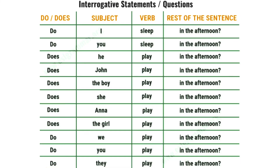In questions: 'Do I sleep in the afternoon?' Here, 'I' is the subject, 'sleep' is the verb, and 'in the afternoon' is the rest of the sentence. 'Do you sleep in the afternoon?' Here, 'you' is the subject, 'sleep' is the verb, and 'in the afternoon' is the rest of the sentence. 'Does he play in the afternoon?' Here, 'he' is the subject, 'play' is the verb, and 'in the afternoon' is the rest of the sentence.